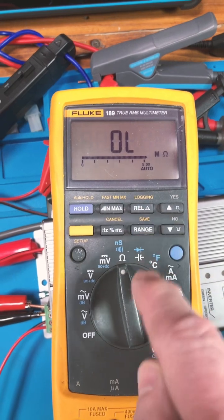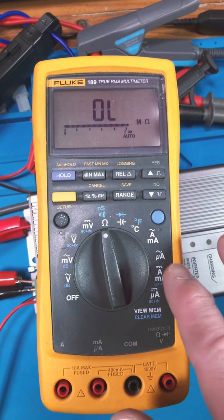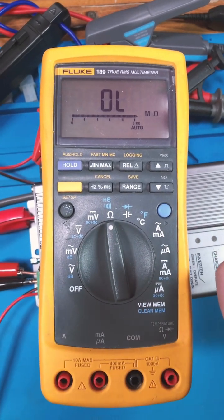And look, clocking cycles, logging, relative, you get all these things. Micro-amps and clear menu, so many features in this Fluke 189.